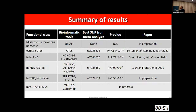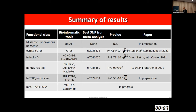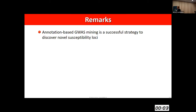A quick summary of results for the other categories: for missense, synonymous, and nonsense variants, I got a disappointment — we didn't find anything interesting. For eQTLs, that was another success story — we had a SNP that reached genome-wide significance, so another champagne bottle. For transcription factor binding sites on enhancers, we have one that is close to genome-wide significance — not quite a bottle of champagne, maybe a glass of beer — but I think it's also interesting.